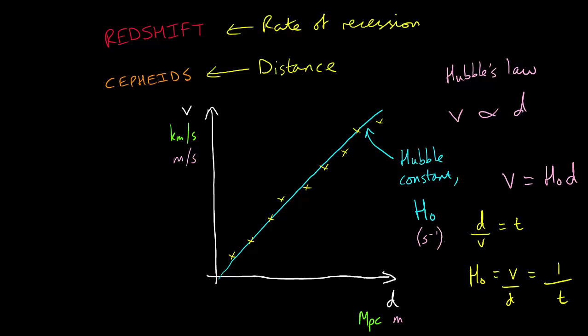So 1 divided by H₀ will give us a time. But what does this time represent? This time represents how long it has taken for the galaxies to reach their current distance away from us, assuming that the expansion has been linear. In other words, it gives us an upper limit on the age of the universe.